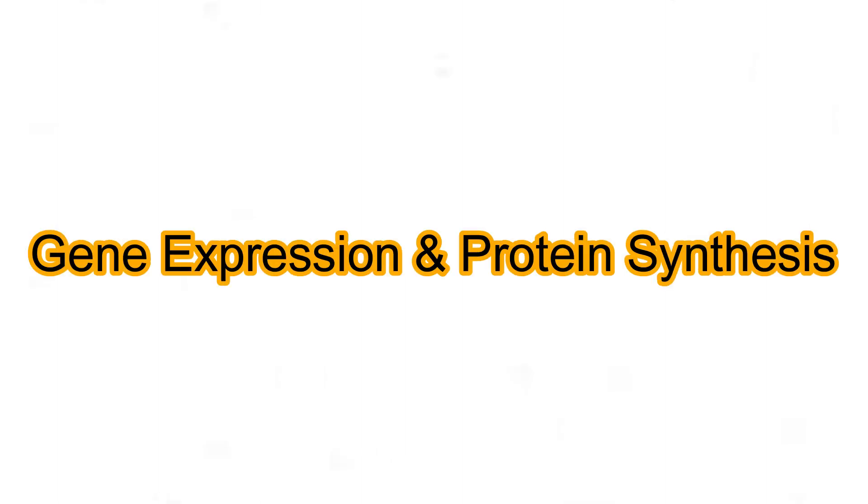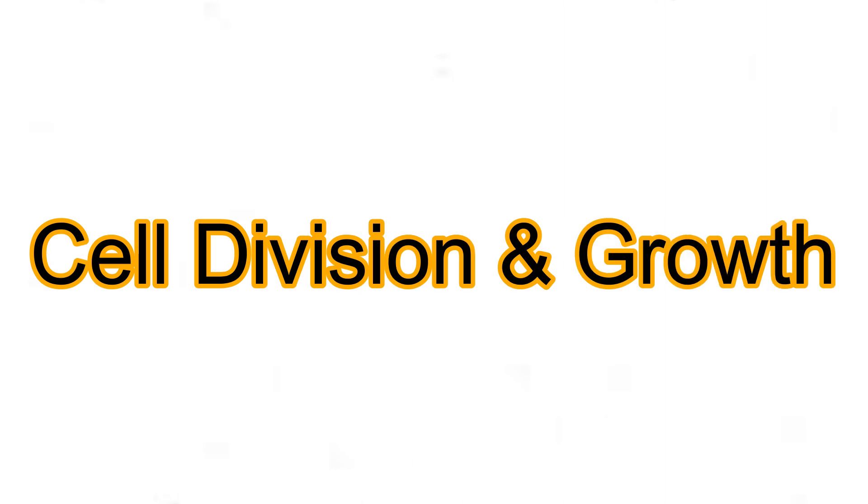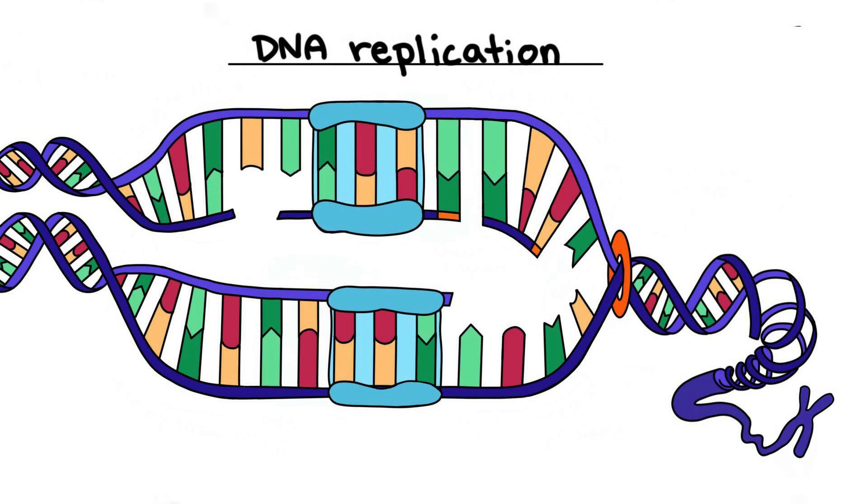Gene expression and protein synthesis. It reads DNA instructions and sends messenger RNA to ribosomes for protein production. Cell division and growth. Before a cell divides, the nucleus duplicates DNA, ensuring each new cell gets an identical copy.